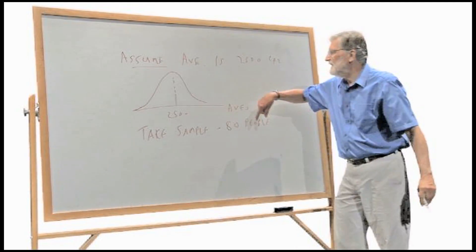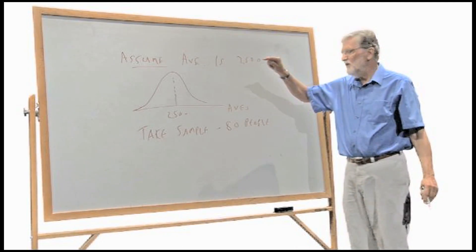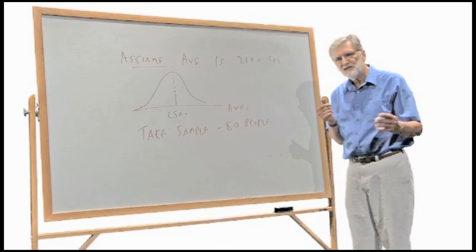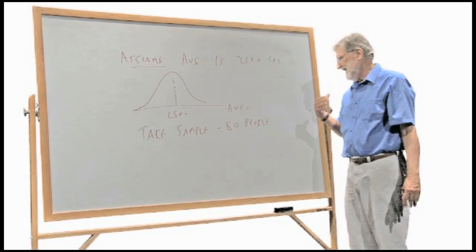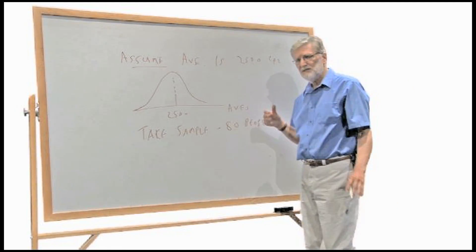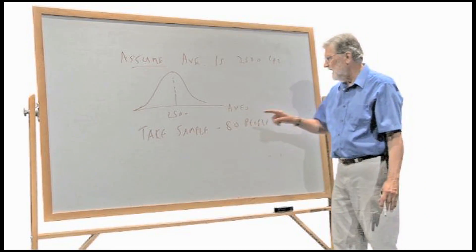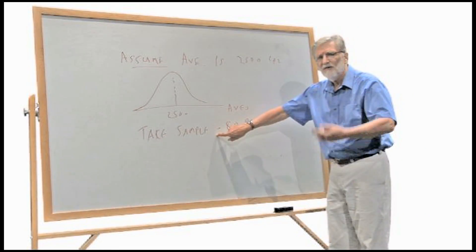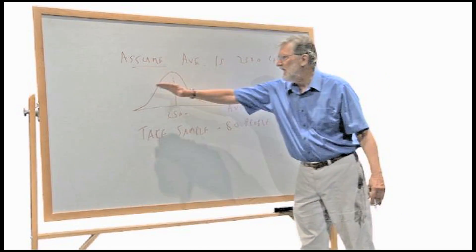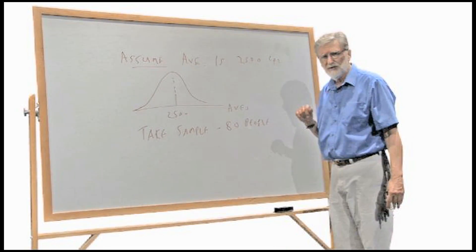Oh, by the way, this idea that the averages follow the bell-shaped curve requires that the samples that you take are reasonably large. Now, what's reasonably large? Well, that's a subject of debate. But for some historical reasons that are really kind of stupid, it's usually said that if you have a sample of at least 30, the central limit theorem works pretty well and you'll get this kind of graph of averages. Okay?